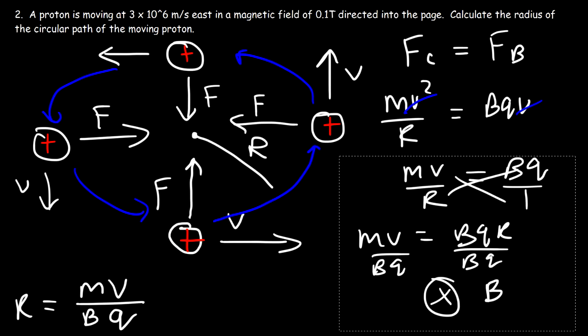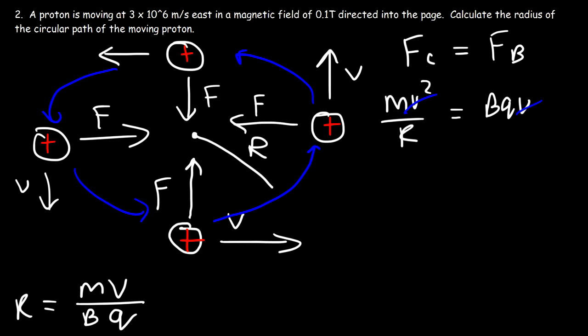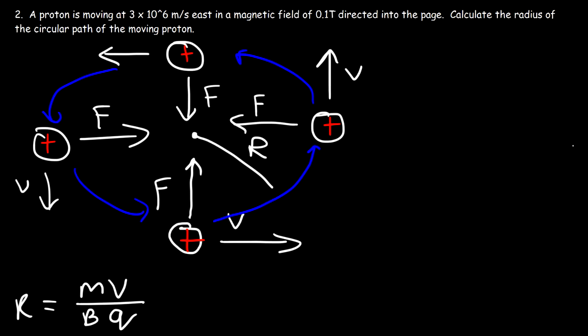An important concept: does the magnetic force do any work on the moving charge? Because the force is always perpendicular to the velocity, it has no effect on the magnitude of the velocity — it only changes direction. Therefore the speed stays constant, no work is done on the proton, and the kinetic energy of the particle remains constant.